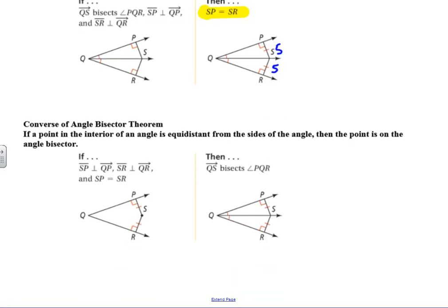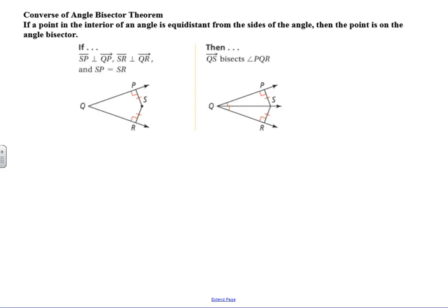Just like with the perpendicular bisector, we can flip this around to get the converse. If a point in the interior of an angle is equidistant from the sides of the angle — meaning SP and SR are the same — then the point is on the angle bisector. So the condition is: interior of an angle, equidistant from the sides, and then we can conclude that QS bisects angle PQR.